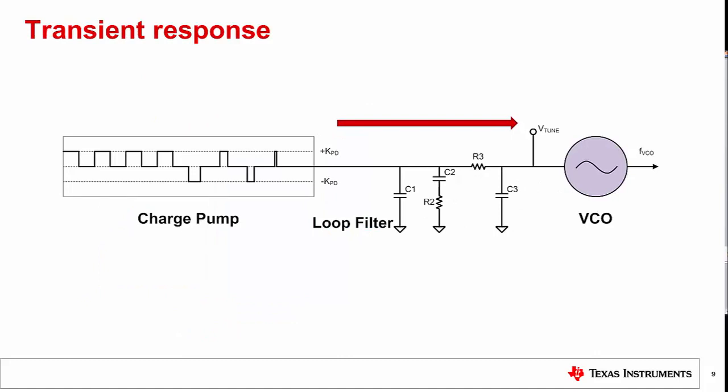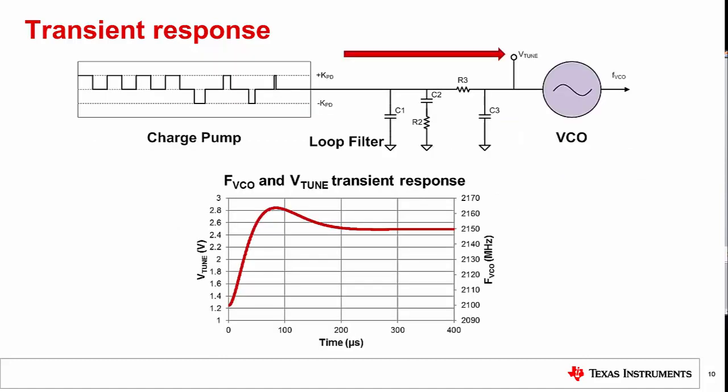The output of the charge pump passes through the loop filter. The low-pass filter accumulates the correction pulses from the charge pump and converts them into a voltage, the VCO tuning voltage, which here we call Vtune. The graph of the VCO tuning voltage and VCO output frequency are plotted against time. The VCO frequency tracks the changes in tuning voltage. The VCO gain, also known as KVCO, quantifies the change to the output frequency based on tuning voltage. VCO gain is typically given in units of megahertz per volt.